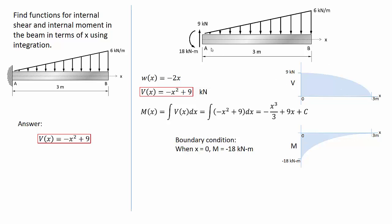At the support reaction at A, the moment diagram should be equal to the moment reaction, 18 kN meters.